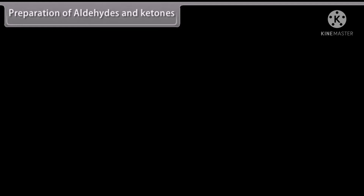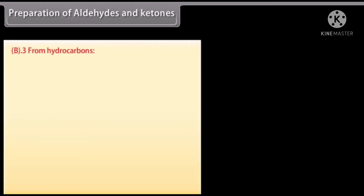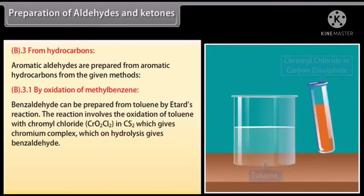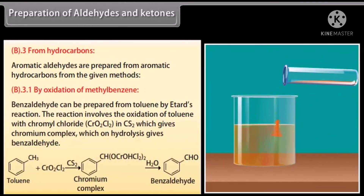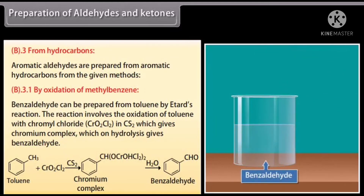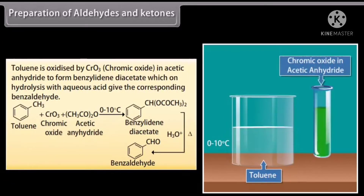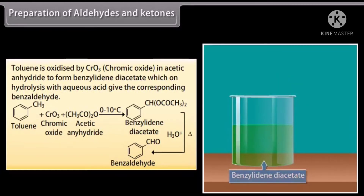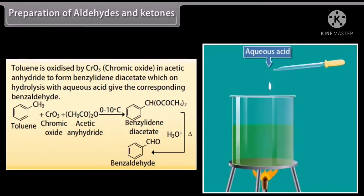Aromatic aldehydes are prepared from aromatic hydrocarbons by oxidation of methylbenzene. Benzaldehyde can be prepared from toluene by Etard's reaction, which involves the oxidation of toluene with chromyl chloride in carbon disulfide, giving a chromium complex that on hydrolysis gives benzaldehyde. Toluene is also oxidized by chromic oxide in acetic anhydride to form benzylidene diacetate, which on hydrolysis with aqueous acid gives the corresponding benzaldehyde.